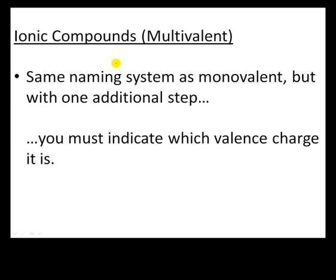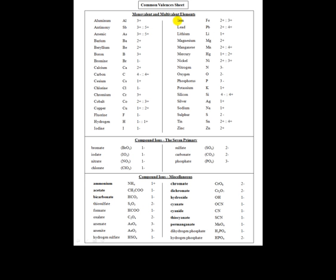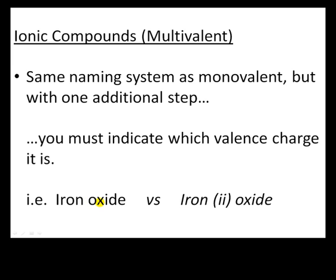The naming system for these compounds is pretty much identical to the one in the last video clip on monovalent ionic compounds, but there is one additional step: you must indicate which valence charge it is. For instance, saying 'iron oxide' is not good enough — you must tell me which iron oxide it is. Looking at iron on the valence sheet, you'll see that iron has two options: 2+ or 3+, meaning it can lose two or three electrons to achieve stability. So you must specify: is it iron 2 oxide or iron 3 oxide?